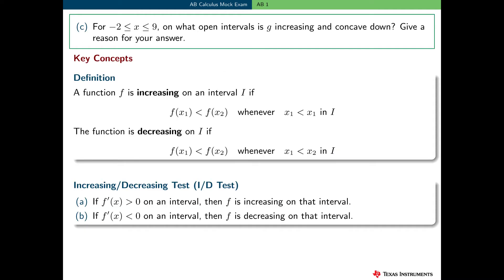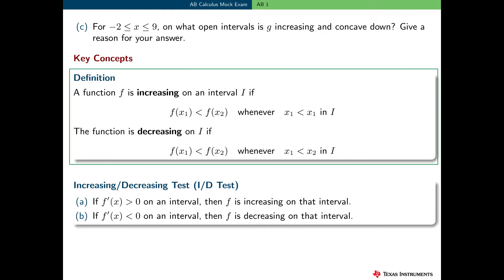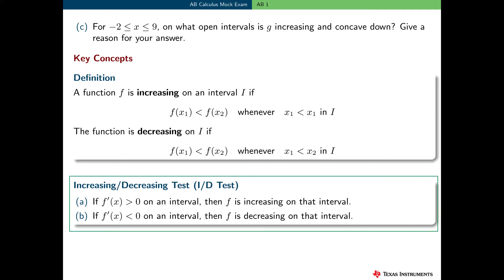In Part C, the student needs to find the open intervals on which g is increasing and concave down, and they need to provide a reason for their answer. Here are some key concepts that we'll need in order to answer this question. First, here's the definition of a function increasing or decreasing on an interval i. Note that this definition is given in terms of an interval as we move left to right, and it does not involve the derivative of f. However, the derivative of f can indeed reveal where a function is increasing or decreasing. Here's the statement of this ID test, and we'll take a closer look at this in a minute.